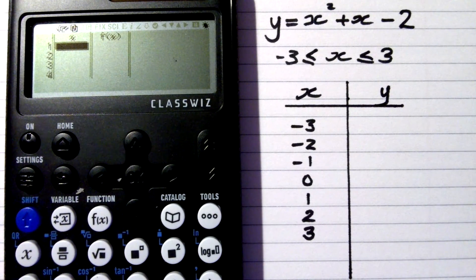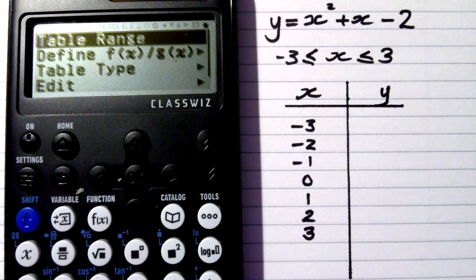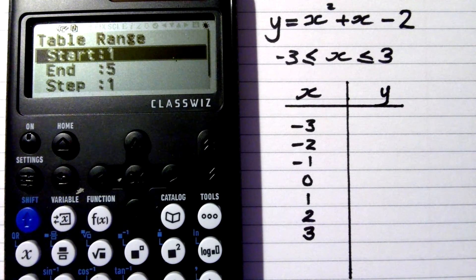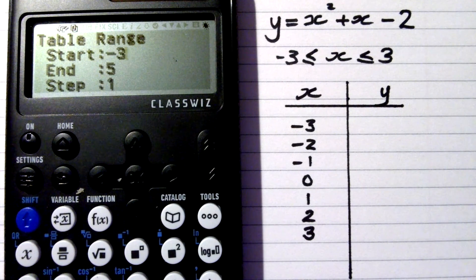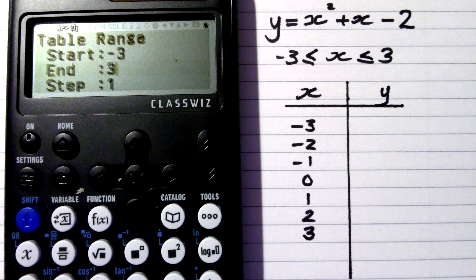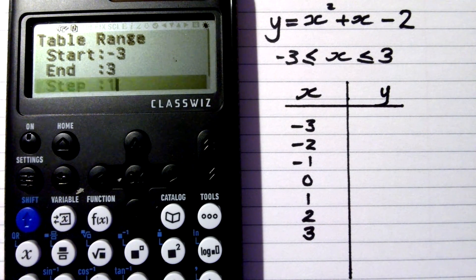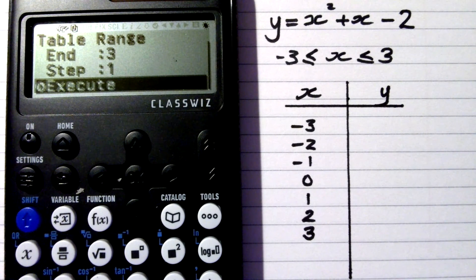Now I've got a blank table. What I need to do is give the range of the function. I do that by pressing tools, then table range — it's there already — press exe. I want to start at negative three, press exe. End is three, press exe. Step: I'm going for step one, so I'll put one in and press exe. Now it tells me to execute, so exe again.